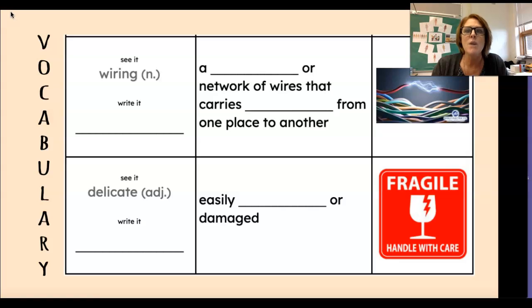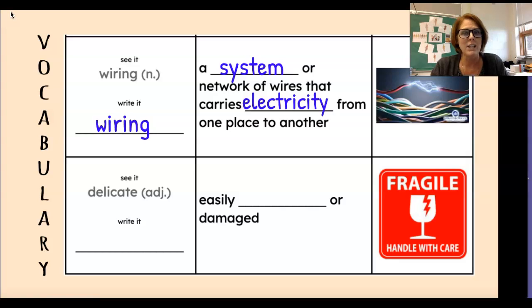The first one is wiring. Everybody say it with me, wiring. This is a noun, write it on the line. It's a system or network of wires that carries electricity from one place to another. It's kind of like how all your nerves are intertwined inside your body. All those over a billion nerves in our body.